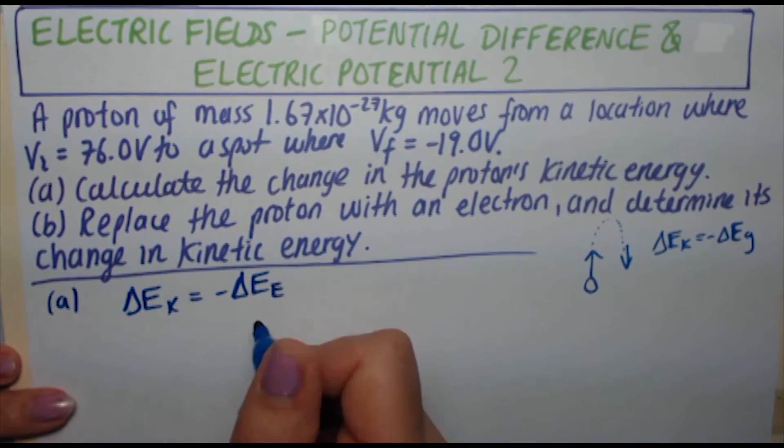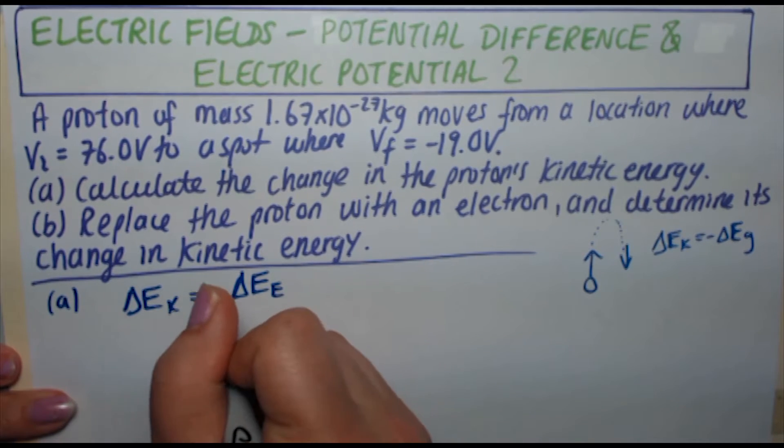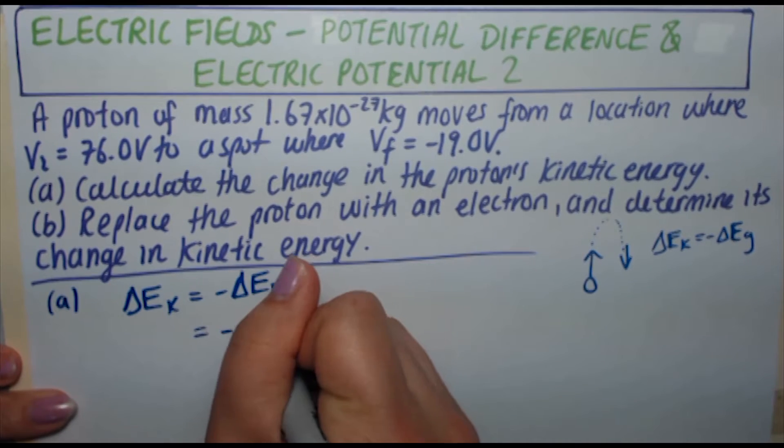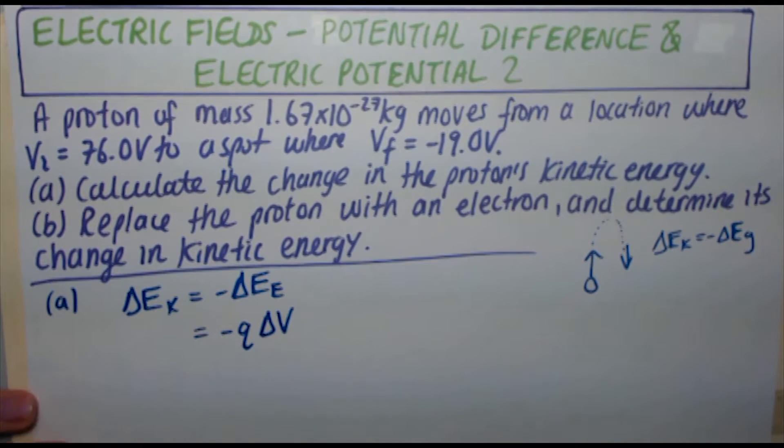And electric potential energy between two spots with different voltages or different potentials is given by minus Q delta V. The minus is just carrying forward from the previous step.